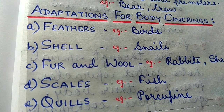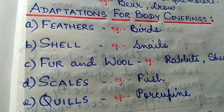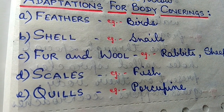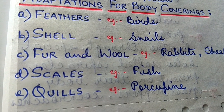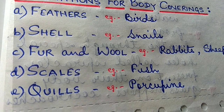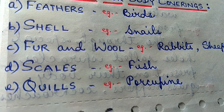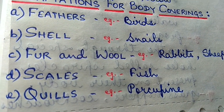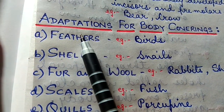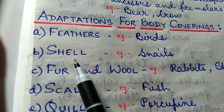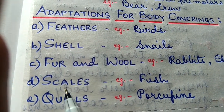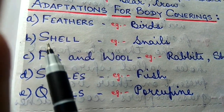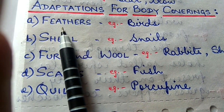Next topic is adaptations for body coverings. The body coverings of an animal help it to survive in its habitat. Let us see the different body coverings of different animals which help them to survive: feathers, shell, fur and wool, scales and quills. Now let's study them in detail.